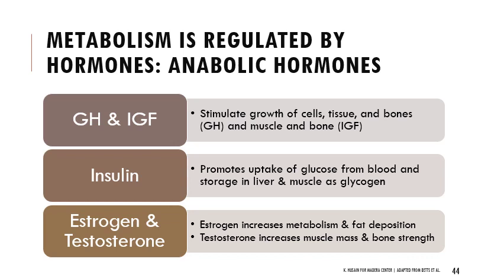The anabolic hormones include growth hormone (GH) and insulin-like growth factor (IGF) — GH stimulates growth of cells, tissue, and bone; IGF stimulates muscle and bone growth. Insulin works opposite of glucagon, promoting uptake of glucose from blood and storing it in the liver and muscle as glycogen. Estrogen increases metabolism and fat deposition. Testosterone increases muscle mass and bone strength.